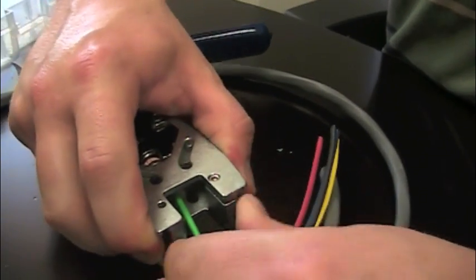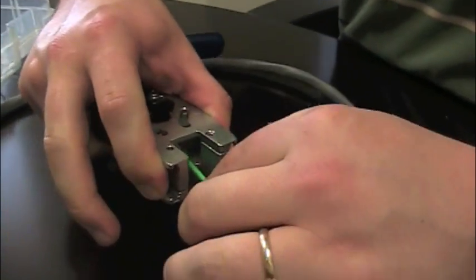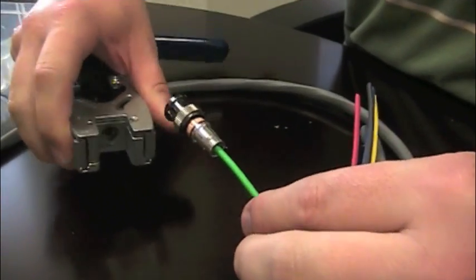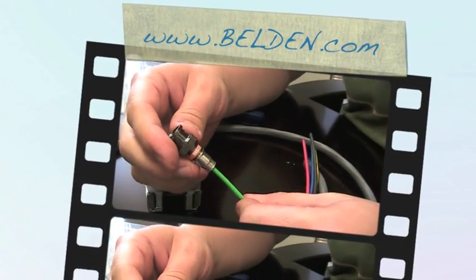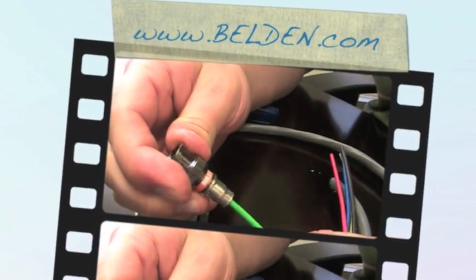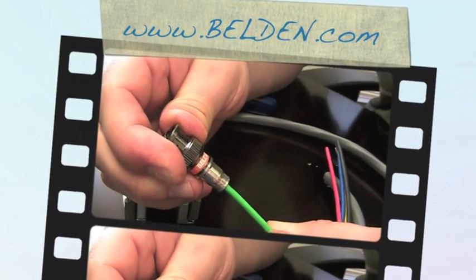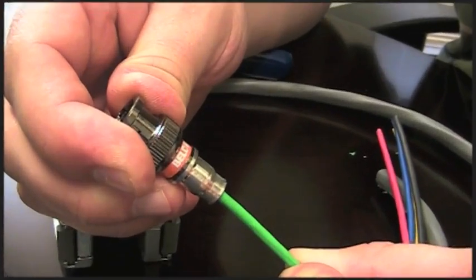Push both the jaws in and you'll be able to free that cable from that center piece, and pull it right out. And you've got a perfectly terminated RGB BNC connection installation.